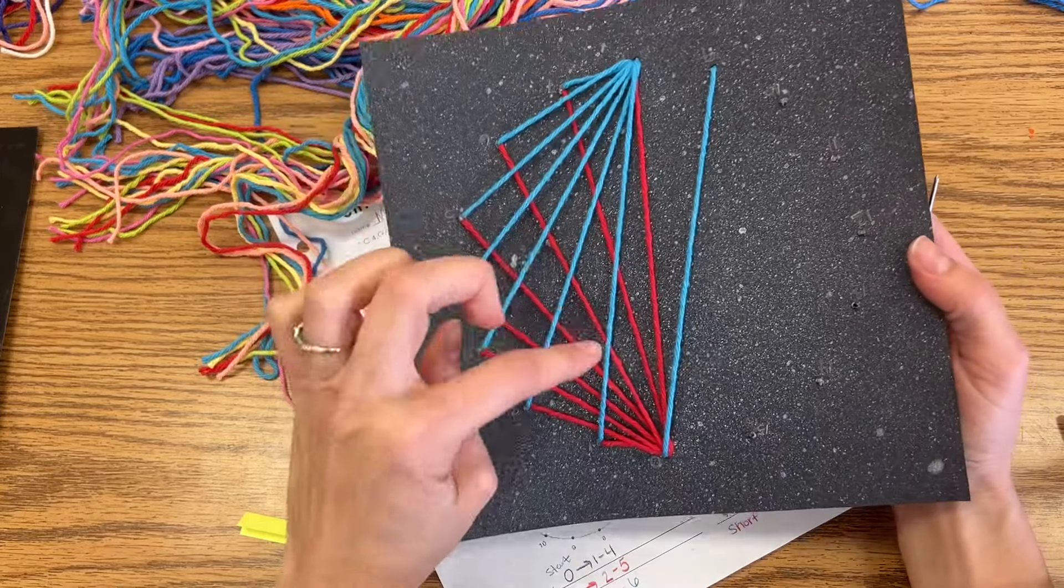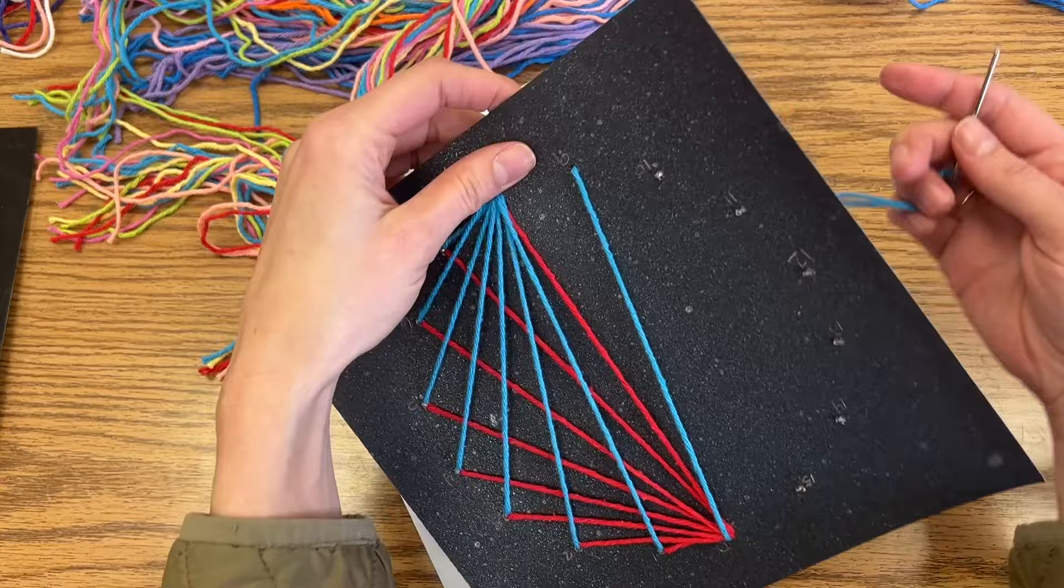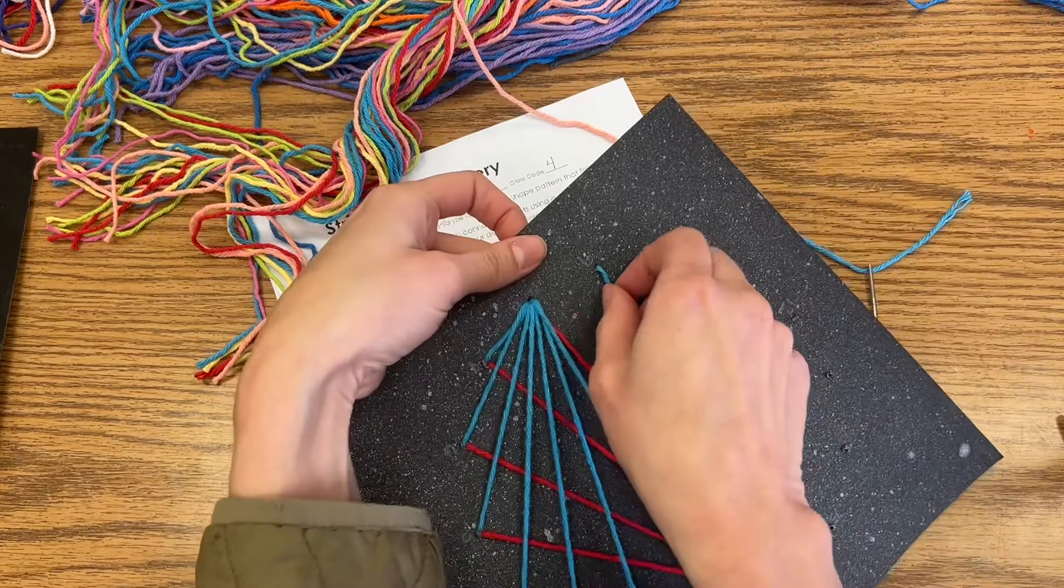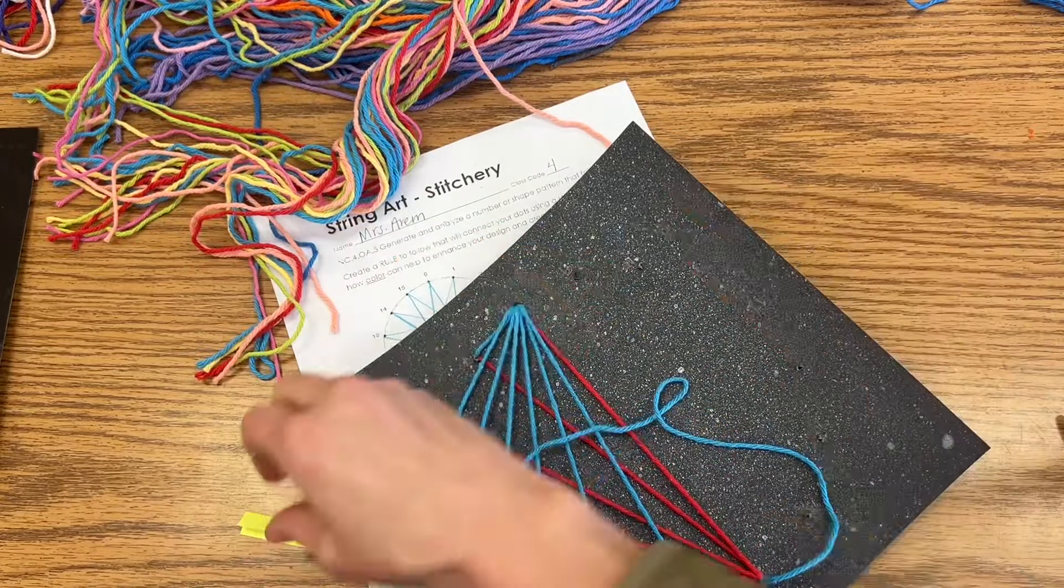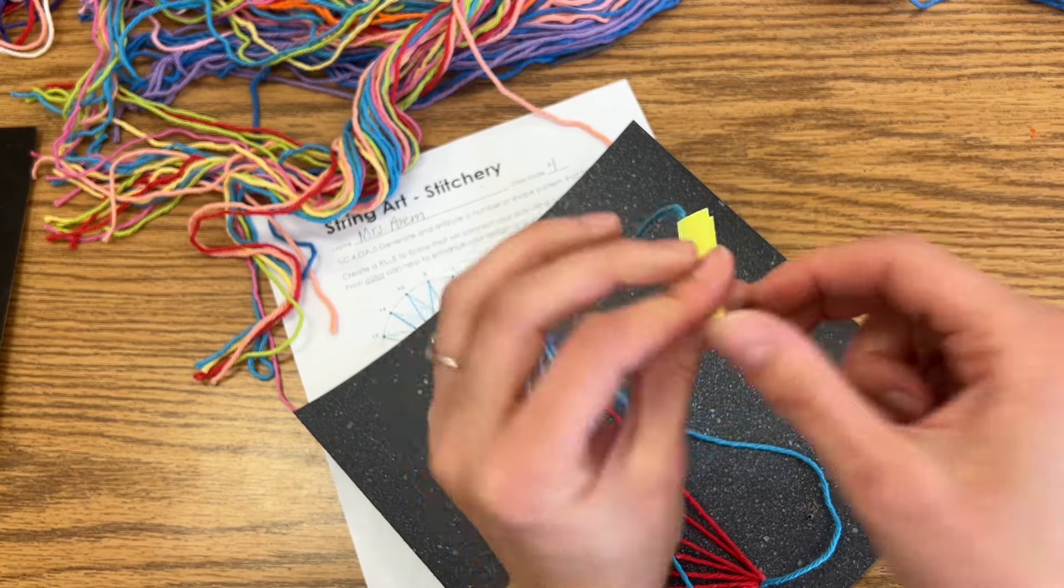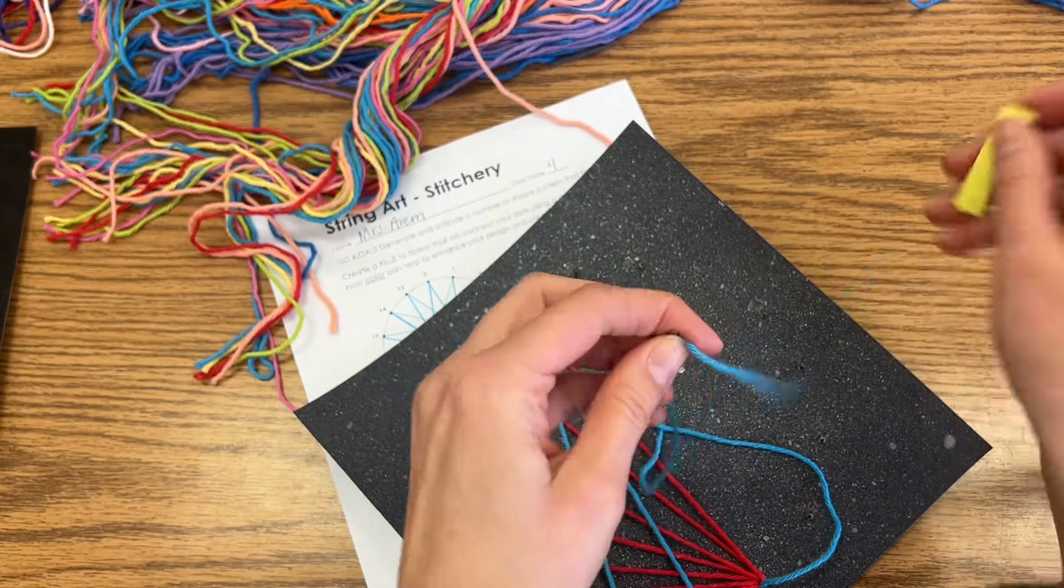Every now and then when you're sewing, you realize that was supposed to go to there, not to there. If that happens, you can always just take your needle off and pull the string back one stitch. Then you can just rethread your needle and you are good to go. The nice thing is if you make a mistake, you can simply pull that thread backwards to get it back to where you can fix that mistake, and then you can just keep on going.